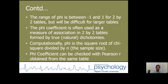This is a measure of association based on adjusting chi-square significance to factor out sample size. The range of phi is between minus 1 and 1 for 2 by 2 tables, but will be difficult for larger tables. Computationally, phi is the square root of chi-square divided by n, where n is the sample size.